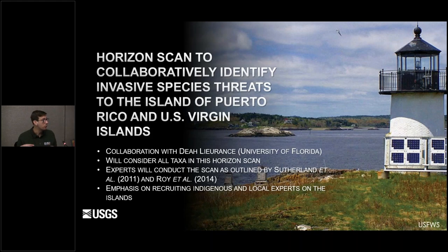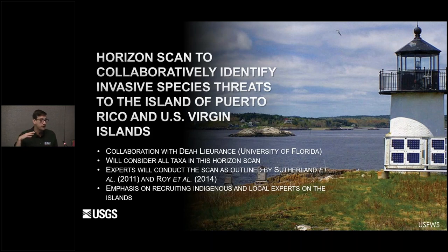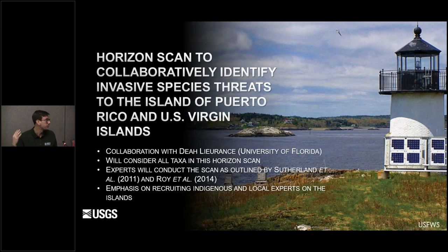Each species is scored on a one to five scale — one would be low potential for establishment, five would be high. The scores for the three categories — establishment, spread, and impact — are multiplied together, and then taxa are ranked numerically. Higher-scoring taxa potentially warrant further scrutiny through a regulatory framework, whether that's an import ban or some kind of restriction on the taxon.